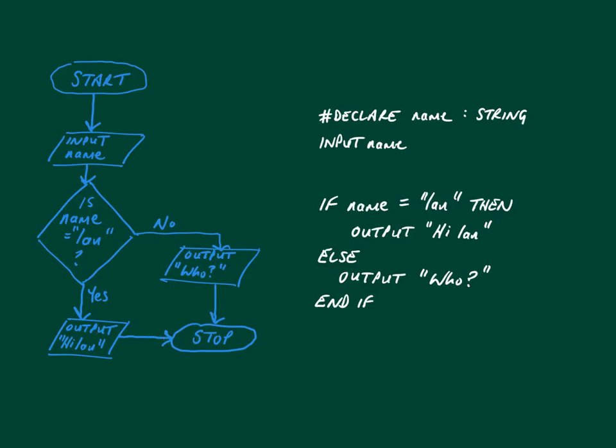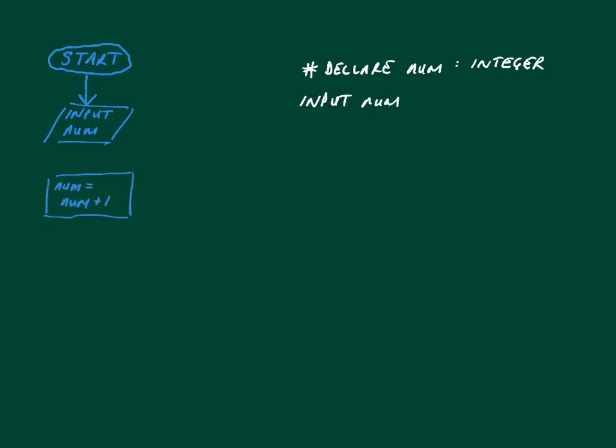Let's look at a second flowchart problem. The first thing we're going to do is get the number from the user and on the right there we've got our pseudocode that matches up to the flowchart. Once the user's inputted a number to the program we're going to add one to it, simply just number equals number plus one. Once we've done that, that process feeds into an output parallelogram so we output it to the screen and then the program stops. Nice and simple.